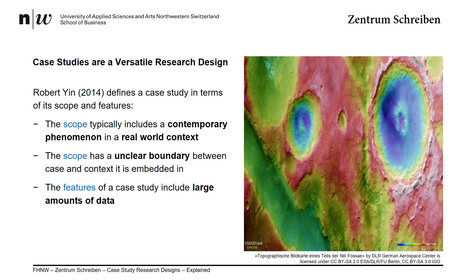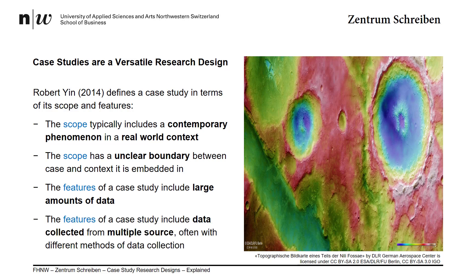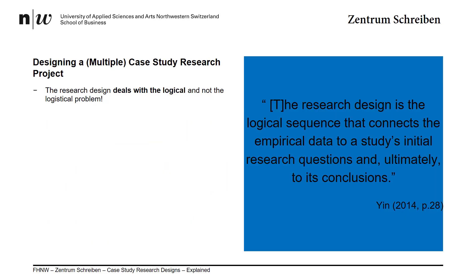One of the more objective features of case study research designs is that they typically include very large amounts of data that the researcher needs to be able to deal with. This data is more often than not collected from multiple different sources to ensure a high degree of construct validity — in other words, that we are actually studying those aspects of the phenomenon that we are interested in and have the data needed to draw meaningful conclusions about them. It is important that you recognize that the case study research design represents the logic and not the logistical problem for completing your research project.